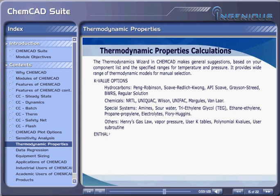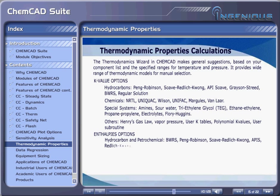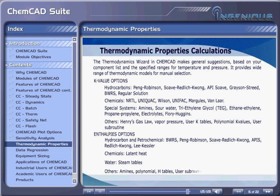Additional K-value options include Henry's Gas Law, vapor pressure, user K-tables, polynomial values, and user subroutines. Enthalpy options available are: for hydrocarbons and petrochemicals — BWRS, Peng-Robinson, Soave-Redlich-Kwong, API, Redlich-Kwong, Lee-Kesler; for chemicals — latent heat; for water — steam tables; for others — amines, polynomial H-tables, user subroutines, and mass balance only.